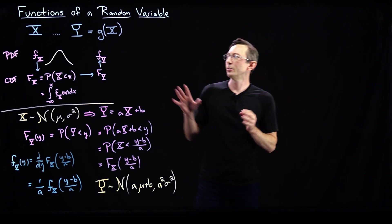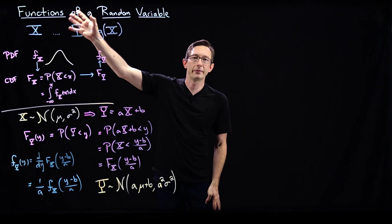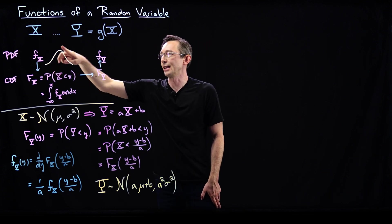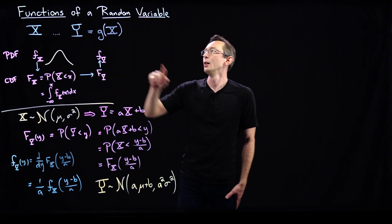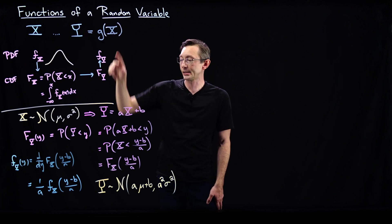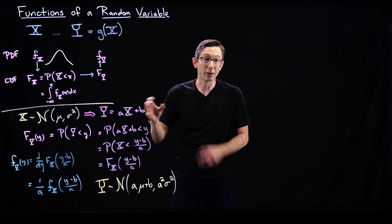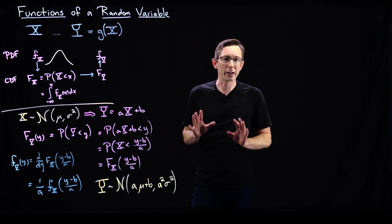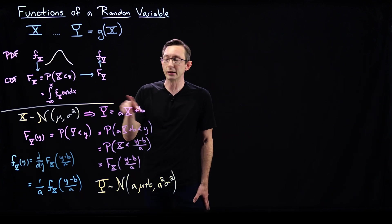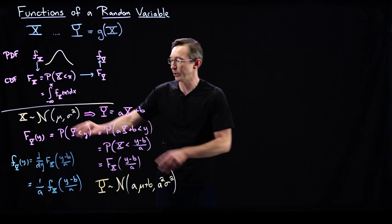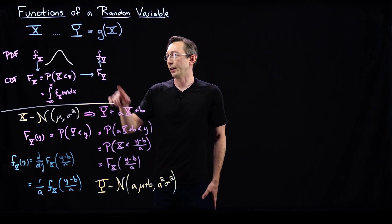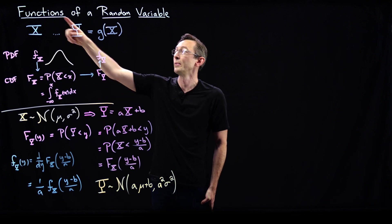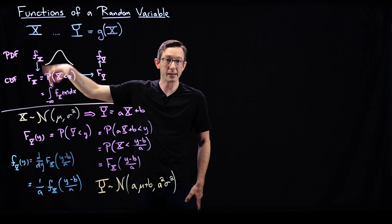Welcome back. So we showed in the last couple of lectures how to define functions of a random variable x. For example, if x is a normally distributed function, we can build functions y of x, like this linear translation and scaling. In general, this is a pretty robust strategy. It's just a linear function, and we showed how to derive the PDF and CDF — the probability density and cumulative density of y — given that we know the PDF and CDF of x.